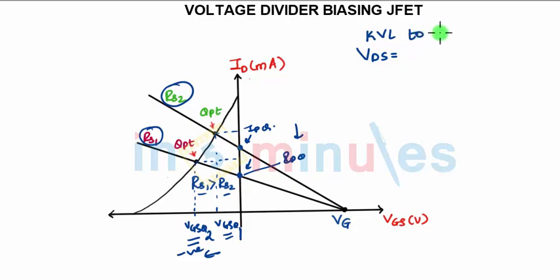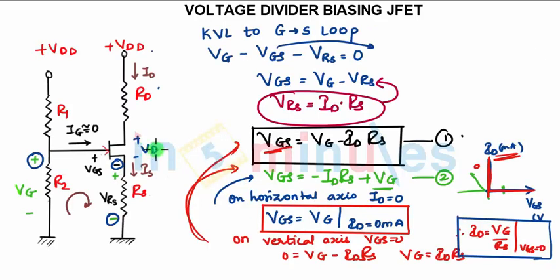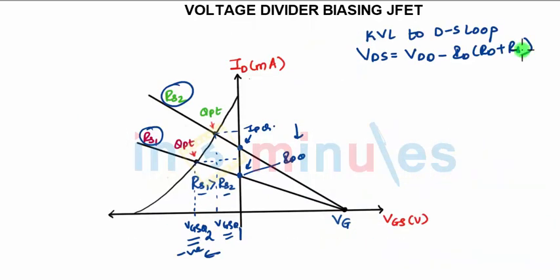Now how to find VDS? KVL to drain-to-source loop will give you VDS which is VDD minus ID into RD plus RS. It will be VDD minus RD RS, and here you have voltage VDS. When you apply KVL from this point to this point, you will get this equation. VD will be VDD minus ID into RD.